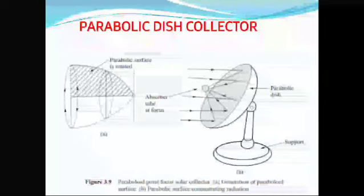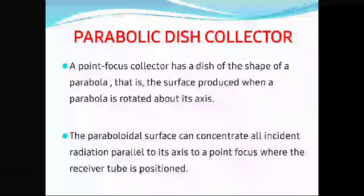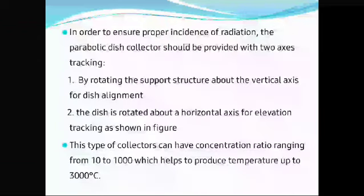The second type is the parabolic dish collector. A point-focused collector has a dish in the shape of a paraboloid, which is a surface produced when a parabola is rotated about its axis. The paraboloidal surface can concentrate all incident radiation parallel to its axis to a point focus where the receiver is positioned. In order to ensure proper incidence of radiation, the parabolic dish collector should be provided with two-axis tracking.